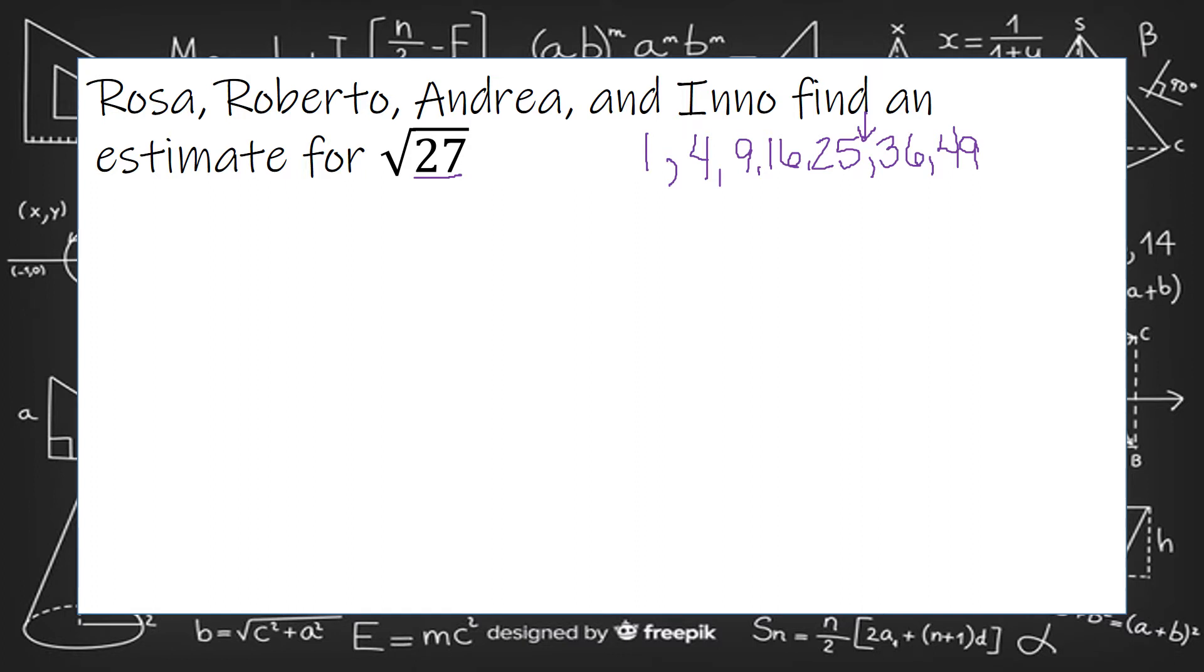If it's between 25 and 36, I know that the square root of 25 would be 5. The square root of 36 is 6 because that means what times itself can give us that number. So I would say the estimate of the square root of 27 would be between 5 and 6.